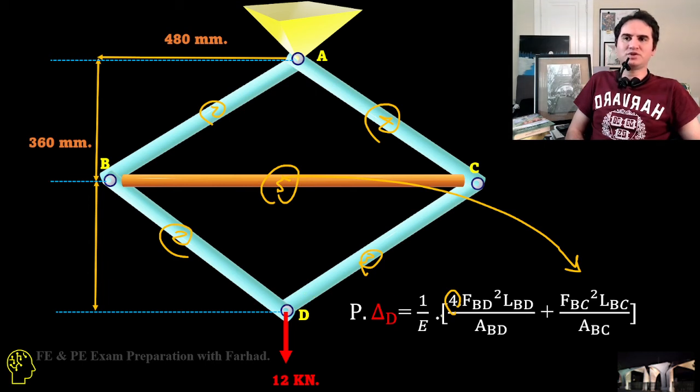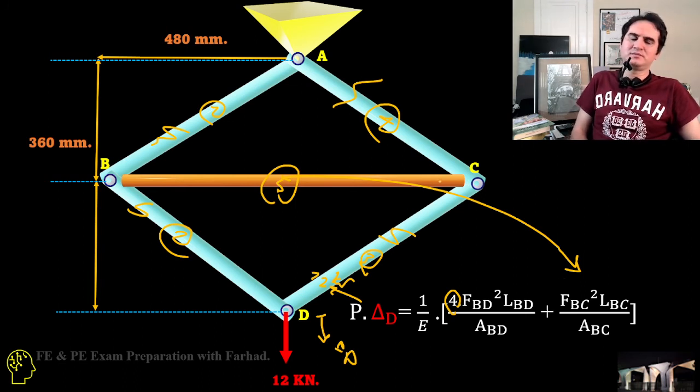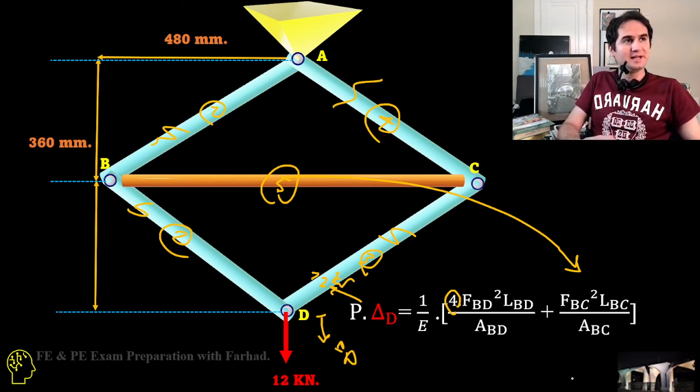We simplify the equation and it just gives us P times delta D. P is 12 kilonewton equal to 1 over modulus of elasticity times open bracket 4 FBD, because the rods are identical to each other, squared times length of BD over area BD plus FBC squared times length of BC over area BC, which you already calculated all of them.